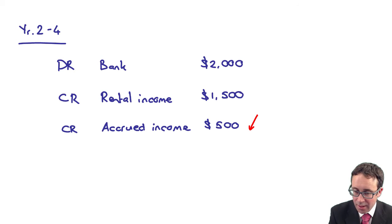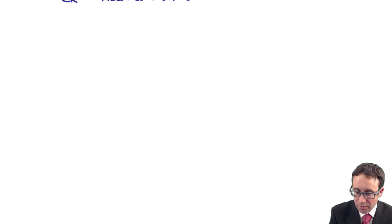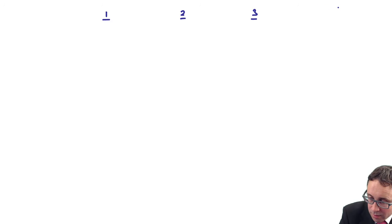If you want to see that in the financial statements, for years one, two, three, and four, you've got on the SFP your accrued income. On the statement of profit or loss, we have our rental income.